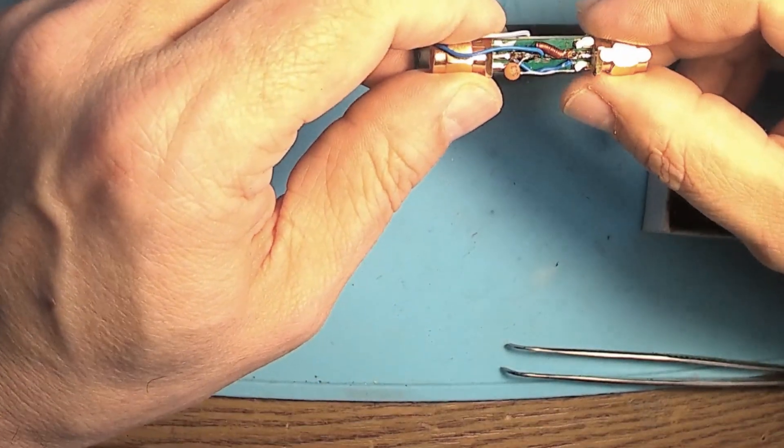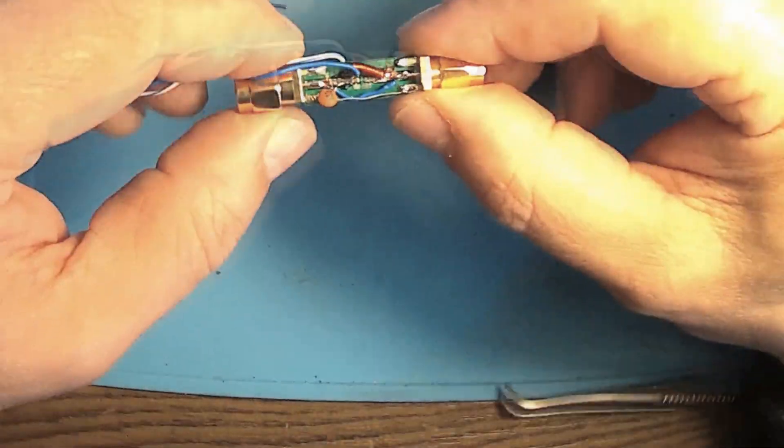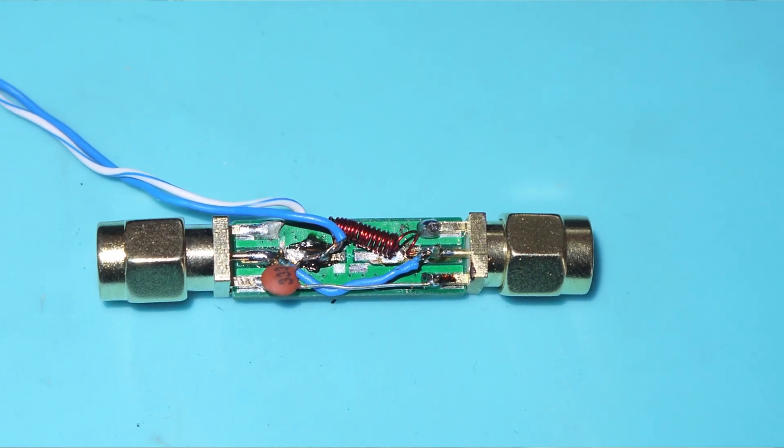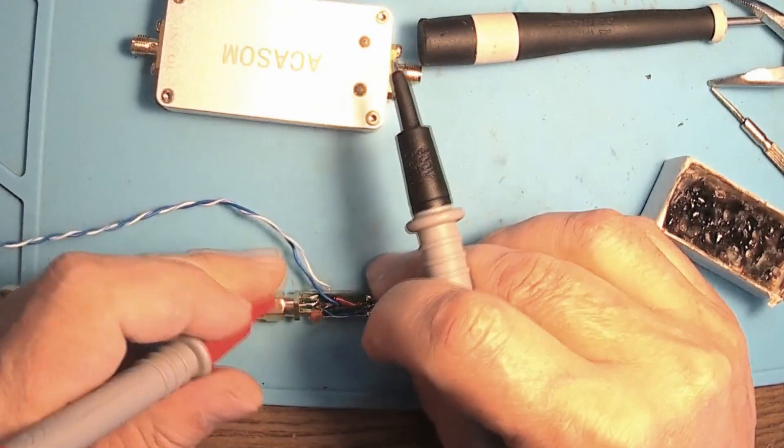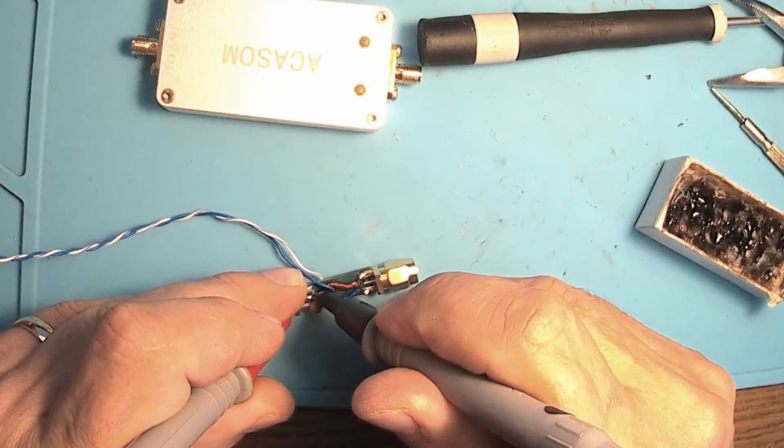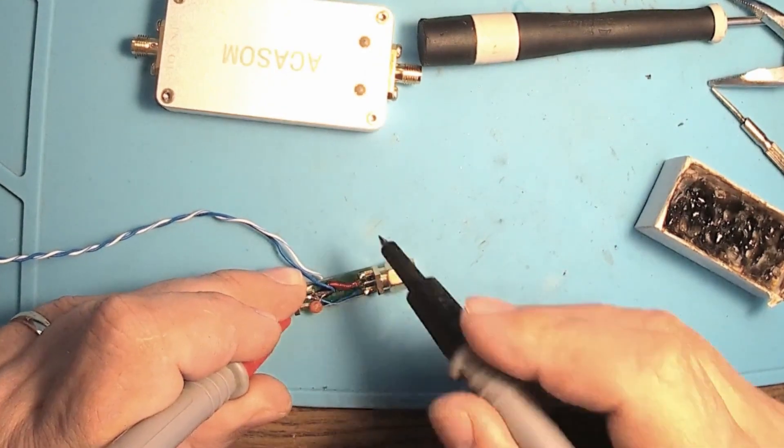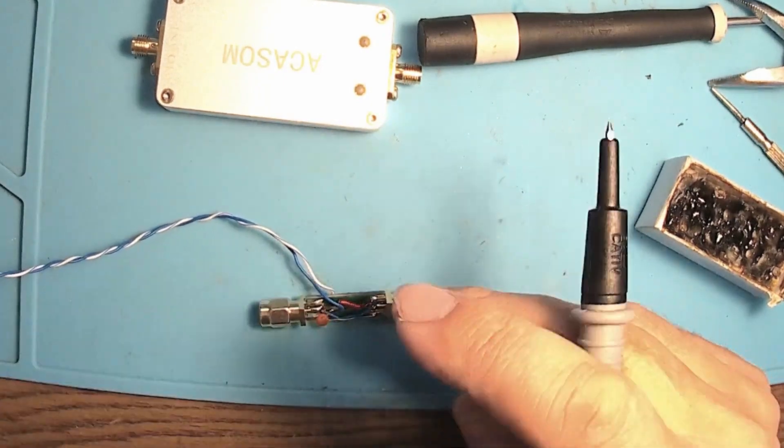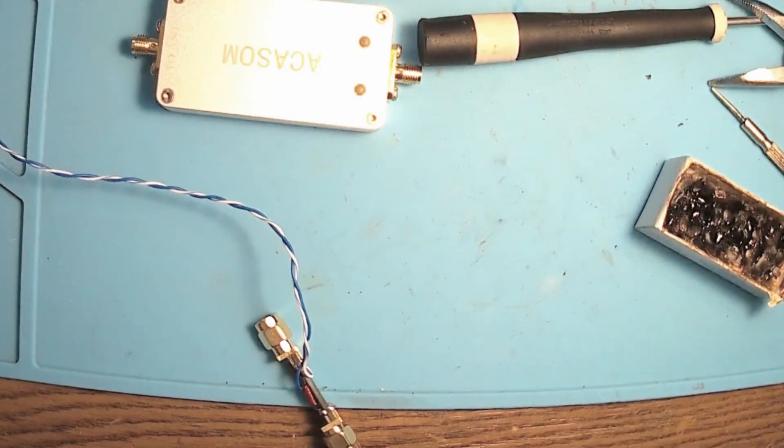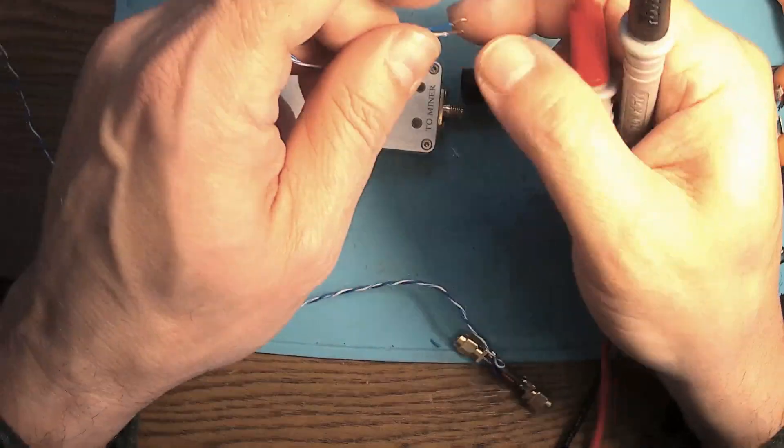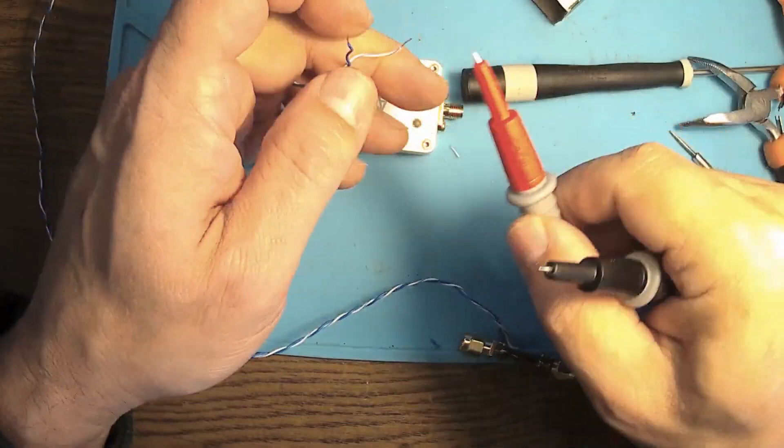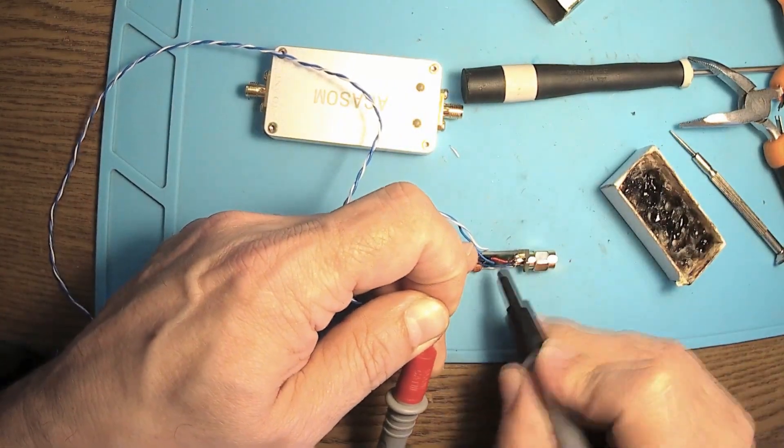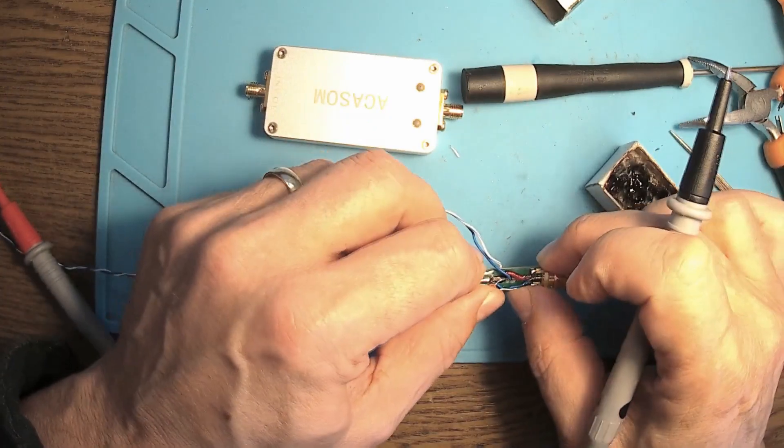Now we have a functional bias T. Check with the continuity meter if we have any shorts. This is the ground, and that's the plus there. We are very good. Middle pin to middle pin, perfect. And also middle pin should go out to plus. Let's check plus to ground. We are good. And the plus should go to the middle pin, of course through the coil. And next step.